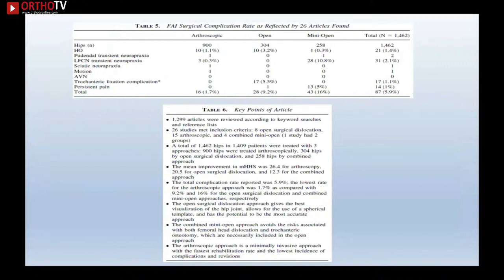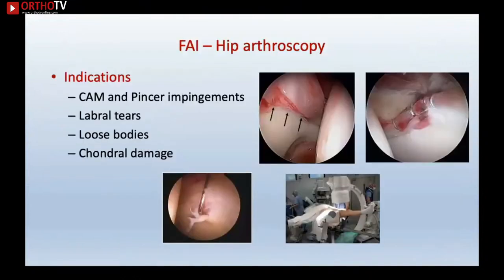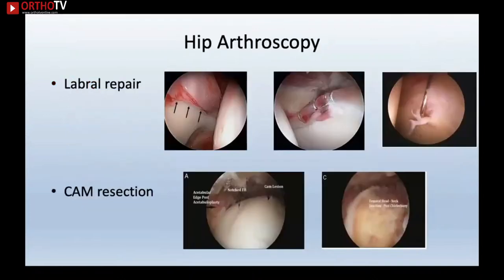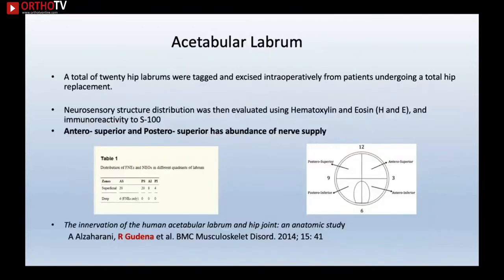Hip arthroscopy indications include cam and pincer impingements, labral tears, loose bodies, and chondral damage. The contraindications are very important — joint space less than two millimetres indicates established arthritis and arthroscopic procedure should be avoided. Other contraindications are also relevant and must be considered.